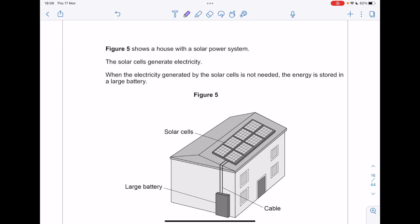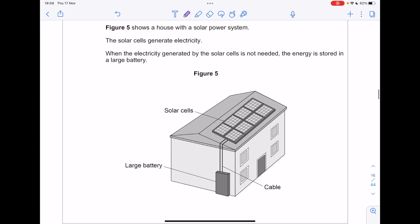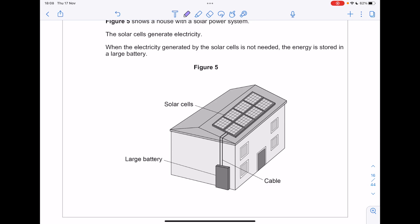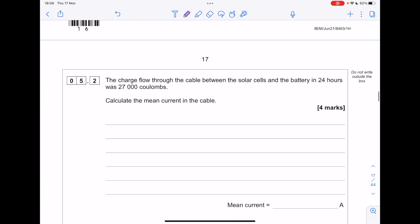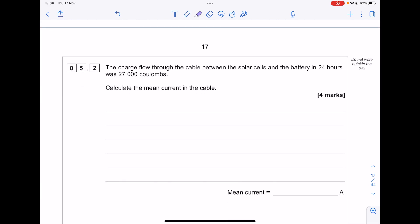Figure 5 shows a house with a solar power system. The solar cells generate electricity. When the electricity generated is not needed, the energy is stored in a battery. The battery, the charge flow through the cable between the solar panels and the battery in 24 hours was 27,000 coulombs. Calculate the current.